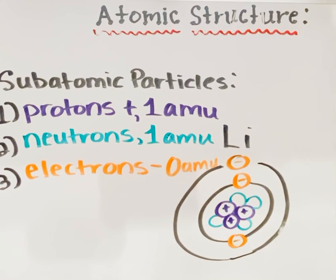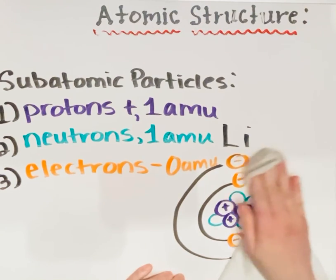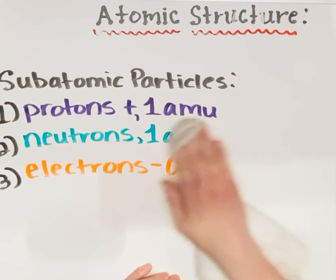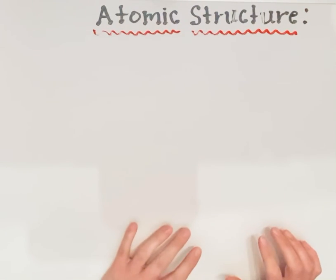So how do I know this? Where do I find this information? Well, you would have to look at the periodic table of elements. The periodic table can give you a lot of information about each element, including the number of protons, neutrons, and electrons. Unfortunately, I don't have a periodic table here at home — I have a nice big one at school in poster form. What I'm going to do is draw what I call an element card.